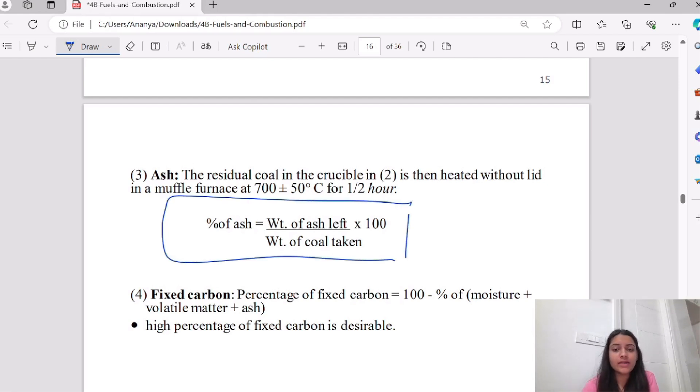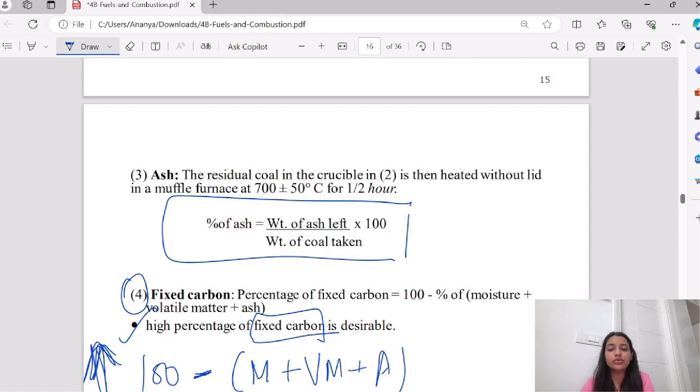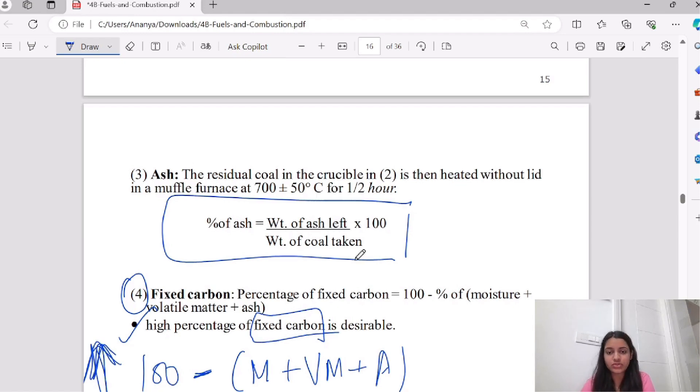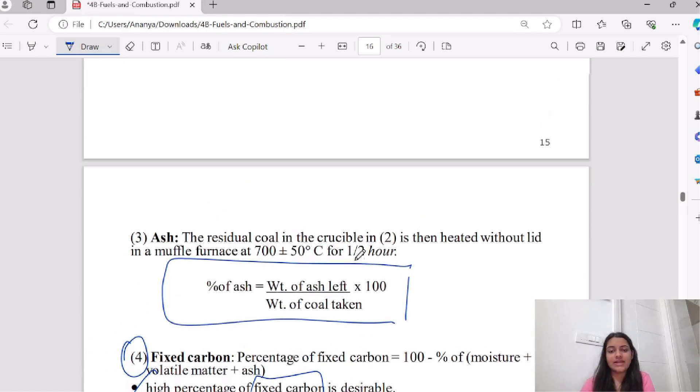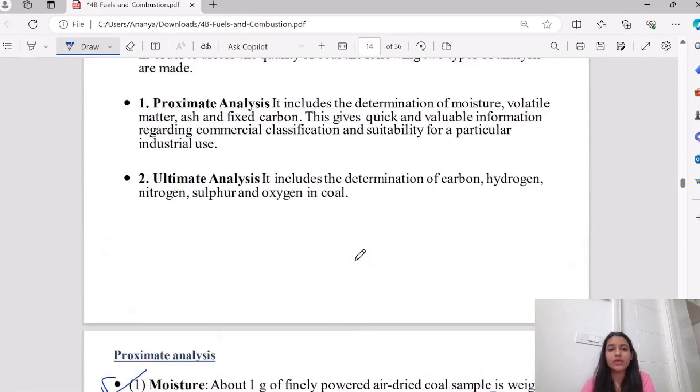The same formula: moisture, volatile matter, ash. Fixed carbon percentage of fixed carbon is 100 minus moisture plus volatile matter plus ash. High fixed carbon value is desirable for a good fuel. This was your proximate analysis.